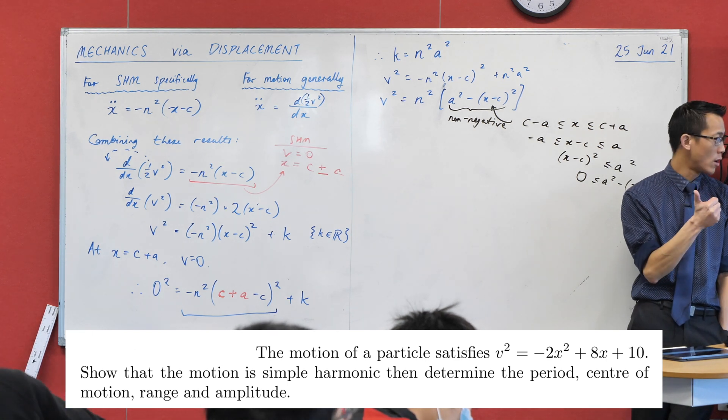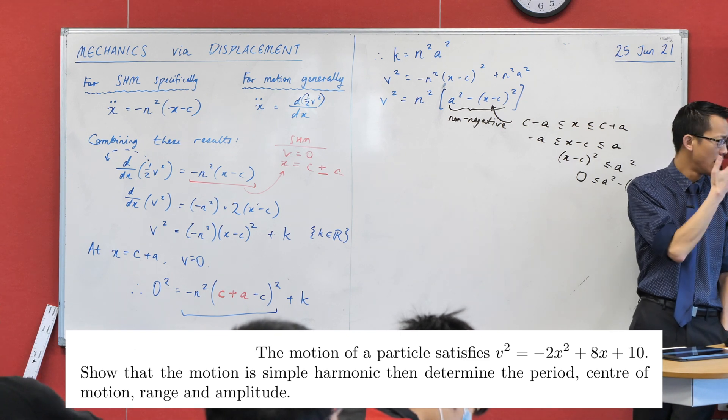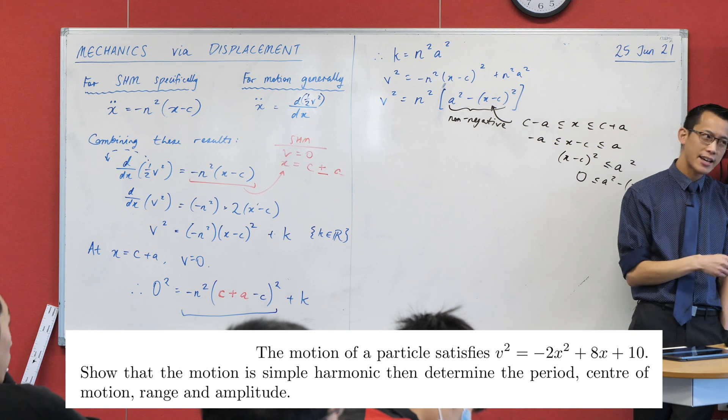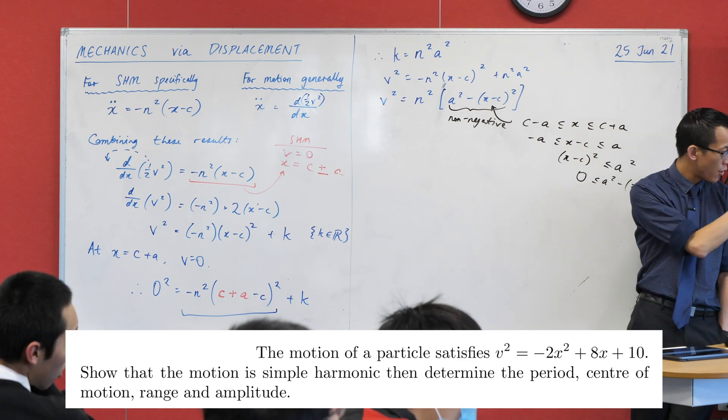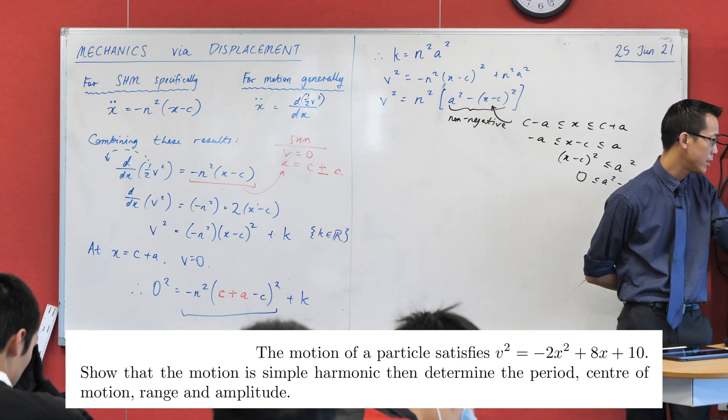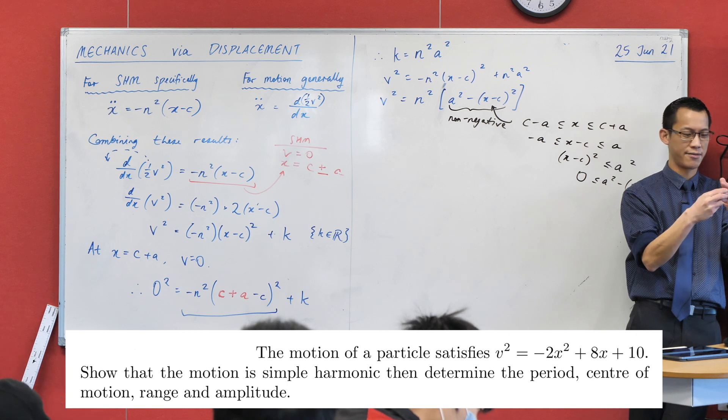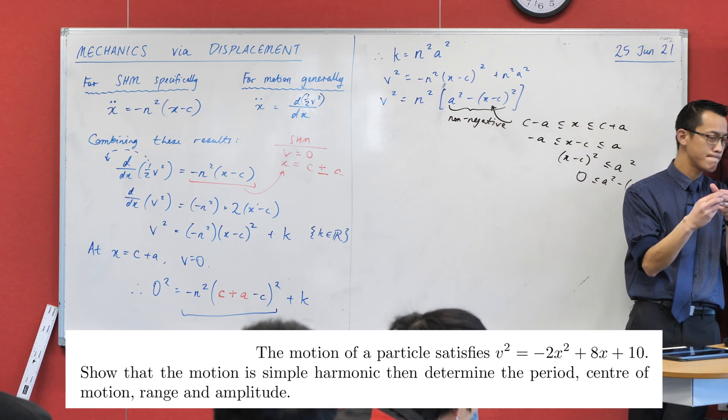What we want to do is two things. Number one, we want to show that it is simple harmonic motion. How can we tell? That's actually the easy part. And then secondly, once we get past that, we want to know these particular qualities of the simple harmonic motion. Period, centre of motion, range and amplitude. Though you'll see range and amplitude are really kind of two halves of the same thing.